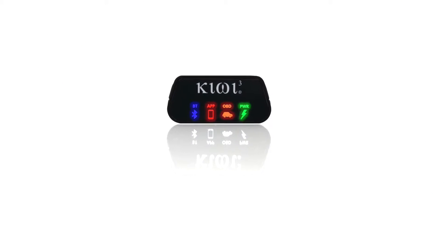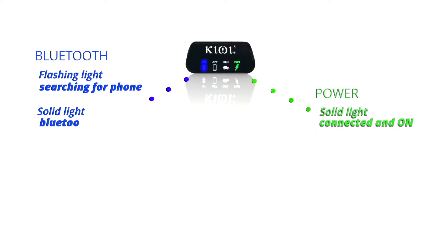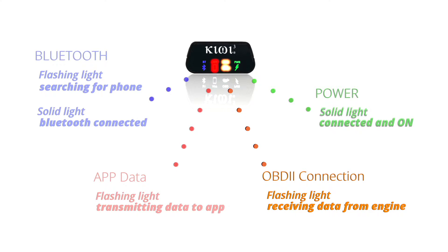First, let's start by understanding what the icons mean on your Kiwi 3. The power icon will be solid when the Kiwi 3 is properly connected to your OBD port. The Bluetooth icon will flash, indicating it's searching for your smartphone. It will turn solid once a Bluetooth connection is established. Next, the app icon will flash, indicating data is being sent to your favorite app. And lastly, the OBD icon will flash, indicating data is being received from your engine.